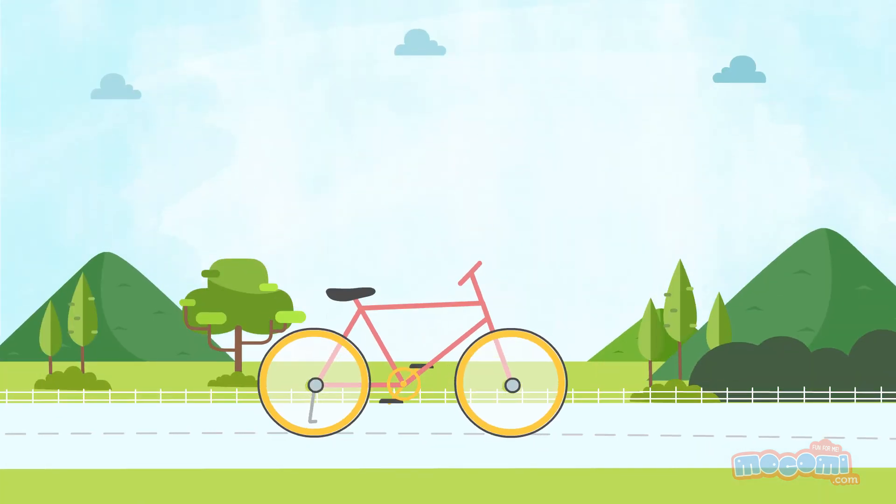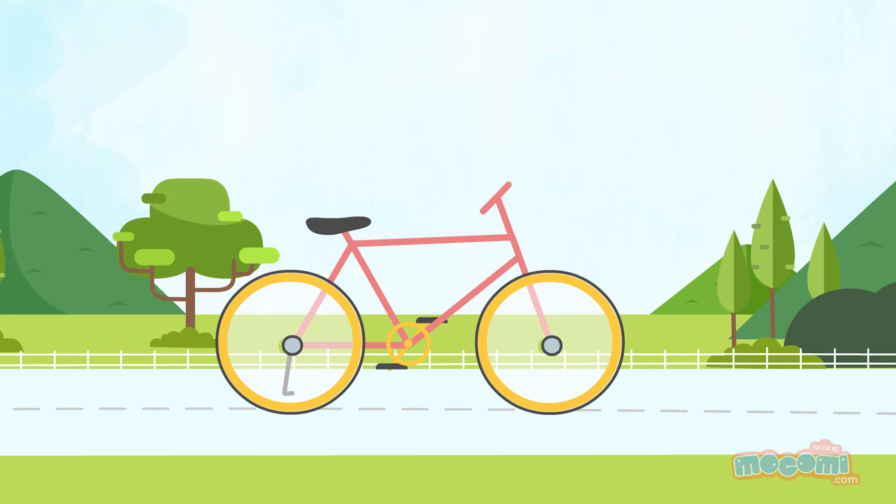If you look at a bicycle, you will see that it is designed in such a way that the front wheel's steering axis makes the front wheel move faster than the back wheel.